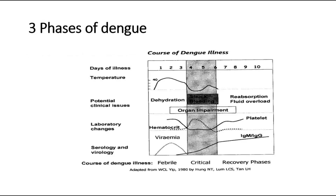There are three phases of dengue: the febrile phase, critical phase, and recovery phase. The febrile phase usually lasts for around two to seven days, where you will experience high-grade fever, signs of dehydration, and there might be some mild hemorrhagic manifestations like petechiae and mucosal bleeding from the nose or gums.